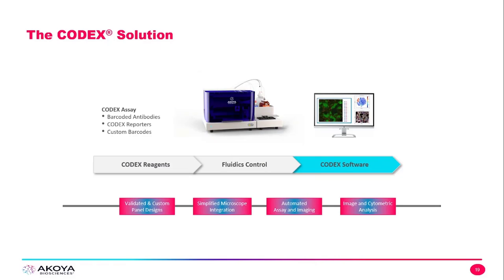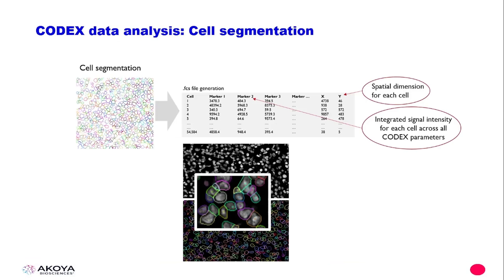Let's talk about the CODEX software used for automation of the instrumentation and, more critically for today, the analysis. After images are acquired through CODEX automation, we segment cells. Cell segmentation allows us to extract features from the images used to phenotype the cells inside of tissue. For each cell in the tissue, we have a spatial dimension — X and Y coordinates — and an integrated signal intensity for each cell across all CODEX parameters, which are the different antibodies used for staining. We have the cytometric composition and spatial coordinates so we can see what cell types we have in tissue and where they're located. We can then pass these data to Seurat to perform clustering and eventually cell neighborhood analysis.